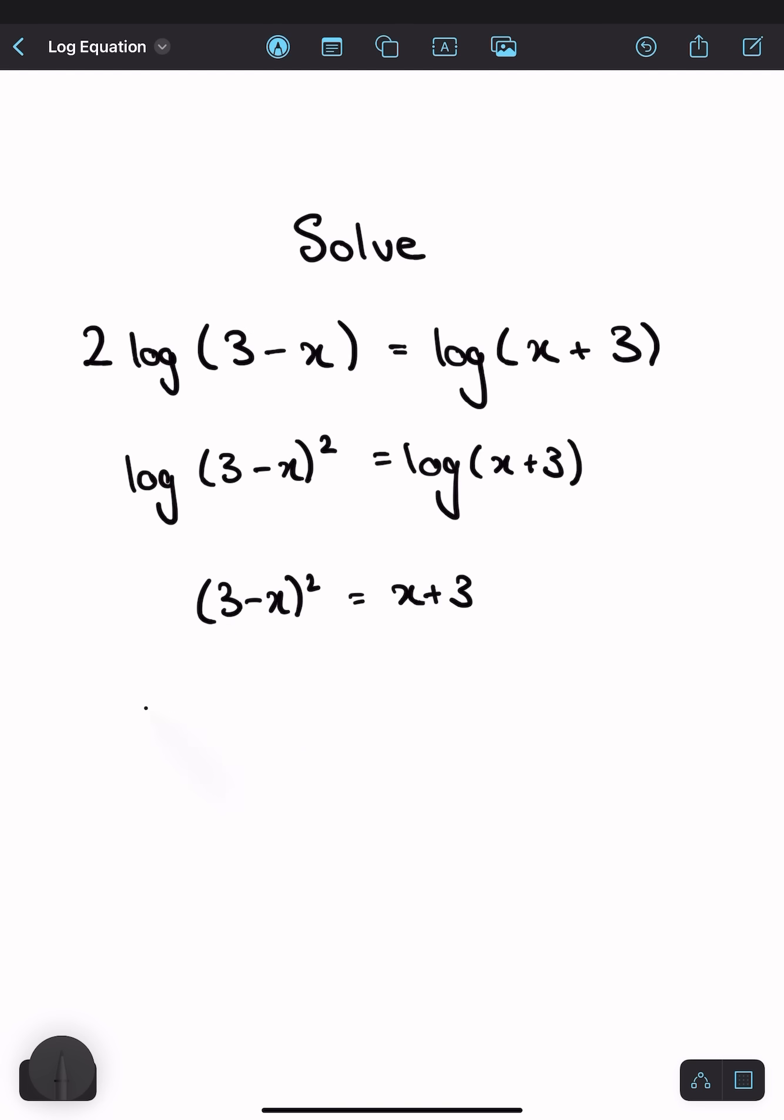If I expand this left-hand bracket, I get 9 - 6x + x² = x + 3. If I rearrange, I get x² - 7x + 6 = 0.